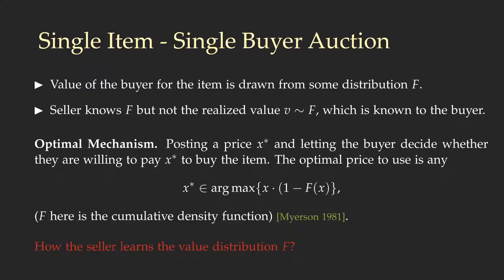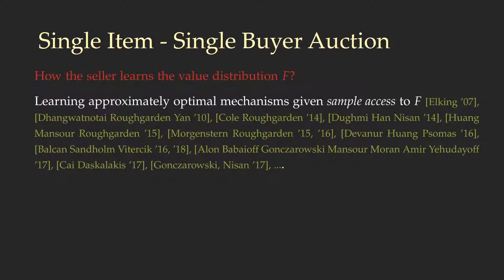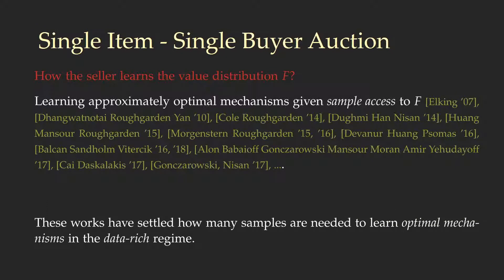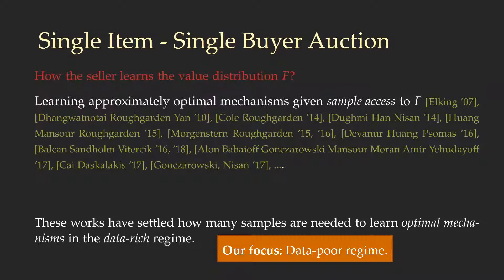One important issue we have to resolve in order to apply this mechanism is how the seller learns the value distribution F. A recent line of work in computer science and economics tackles the problem of learning approximately optimal mechanisms given only sample access to the distribution F. As a result, we know how many samples are needed to learn approximately optimal mechanisms in the data-rich regime, where we have plenty of samples available.